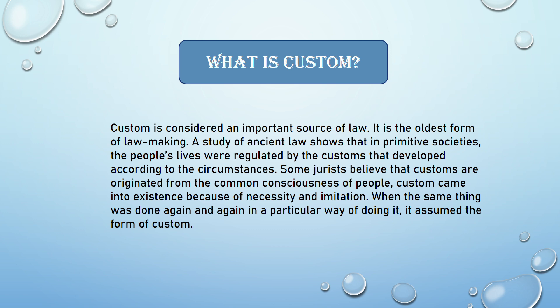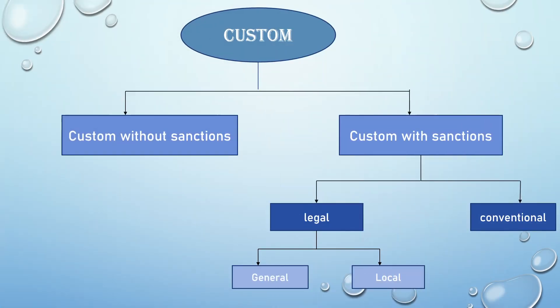Now let's move to the types of customs. There are basically two types: custom without sanctions and custom with sanctions. Custom without sanctions are non-obligatory in nature and are followed because of public opinion. Customs with sanctions are binding in nature and are enforced by the state.